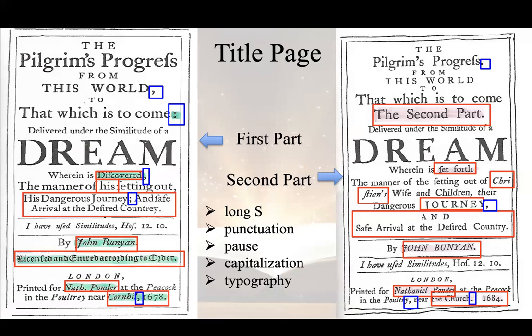If you look at the middle parts of both sides, there is a word AND. Now on the right hand, it forms a new line with all letters capitalized, and in the next line, 'safe arrival at the desired country' follows. This kind of layout is more systematic and reader-friendly.